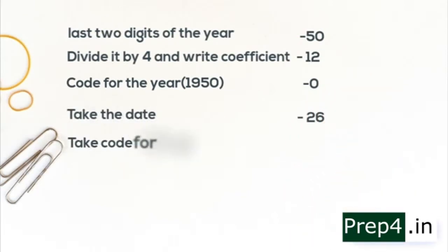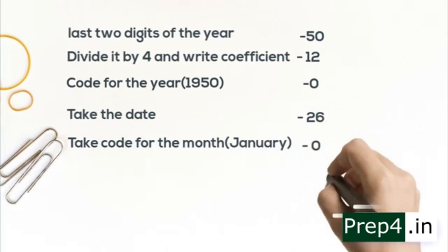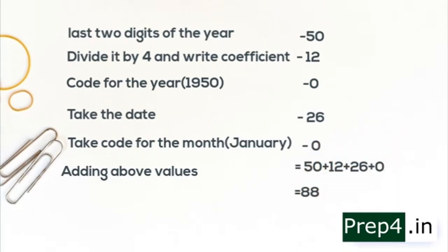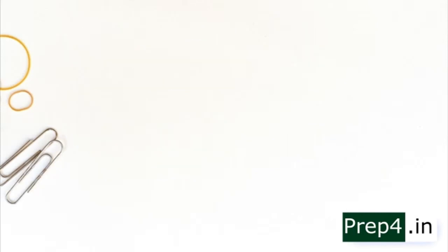Then let's divide 88 by 7. We get 12 as the quotient and 4 as the remainder. So 4 as the remainder, the day is Thursday. So we have solved it and we get the answer Thursday.